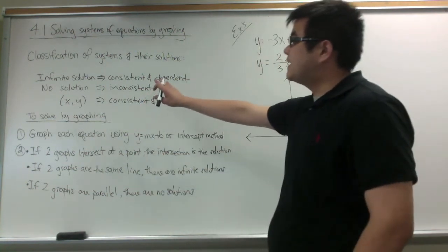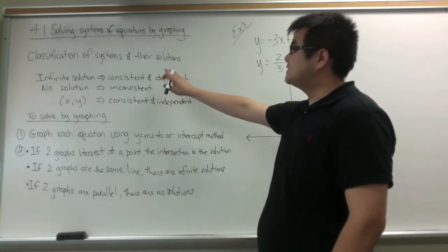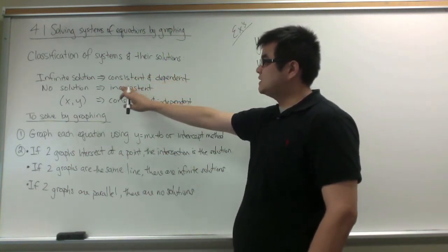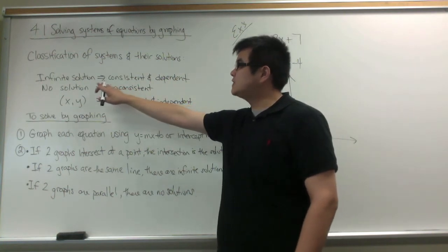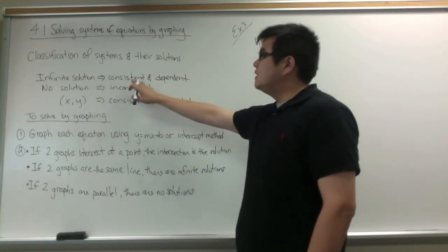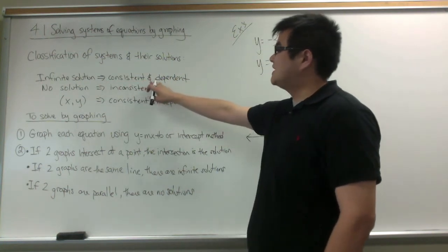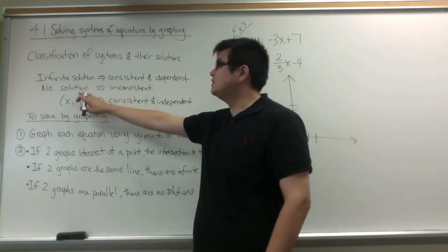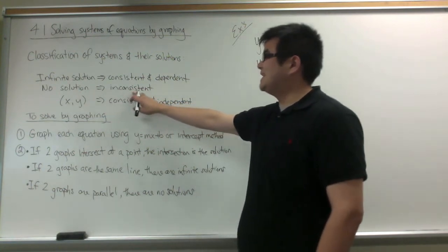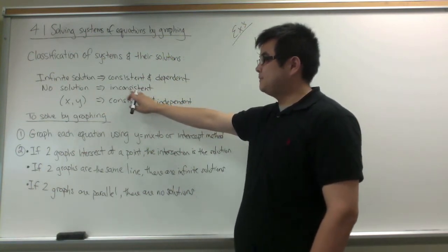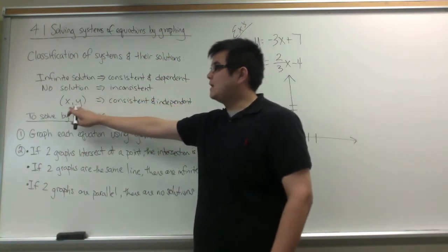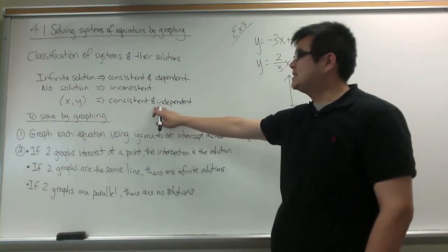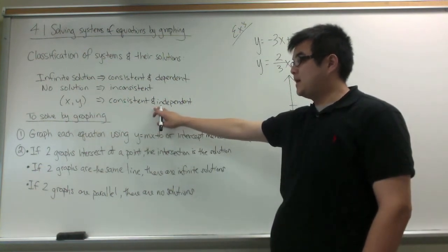There are three classifications of systems and their solutions. The first one is, if you get an infinite solution, your systems are consistent and dependent. If you have no solution, then it is inconsistent. If you get a coordinate as your solution, then it is consistent and independent.